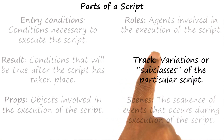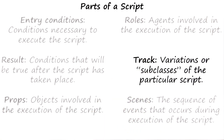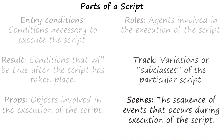The fifth element of a script is a track. Tracks are variations or subclasses of a particular script. So for example, in the case of the restaurant script, we may have tracks for going to a coffee house, going to a fast food restaurant, or going to a fine dining house.